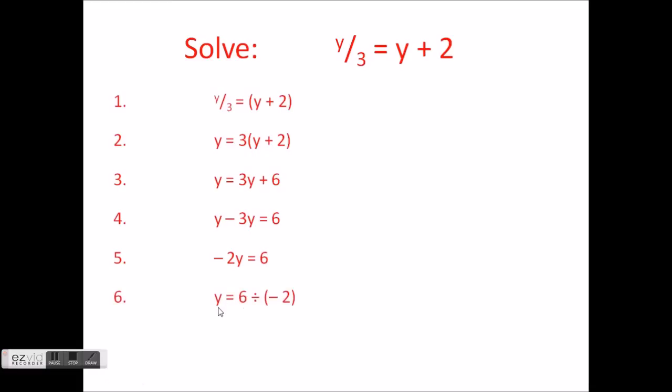Then we have y = 6 ÷ -2, because remember, if we look at step 5, we have -2 times y, so we obviously have to divide by -2. Dividing is the inverse operation of multiplication, so we divide by -2 on the right-hand side, and that gives us y = -3. And then we simply plug it in to our original equation to show, or just to see, that it's indeed correct.